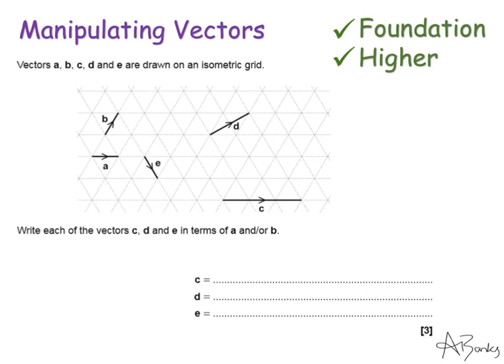The first skill I'm covering here is writing vectors in terms of other vectors, and we're looking at them on a grid, on a diagram. So here it says, write each of the vectors C, D and E in terms of A and or B. Using this vector here, this one represents A and this here is B, we've got to write all of these other three vectors.